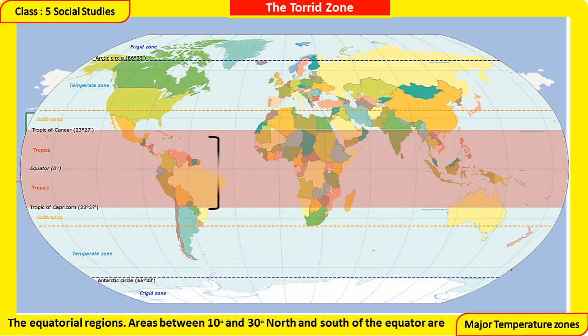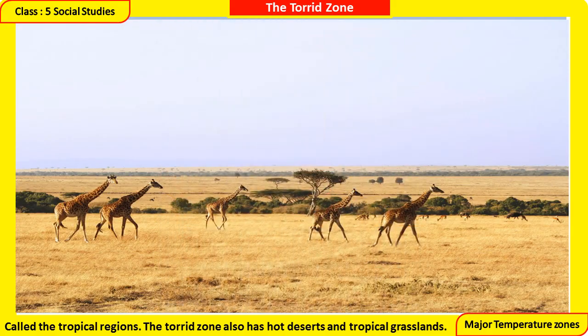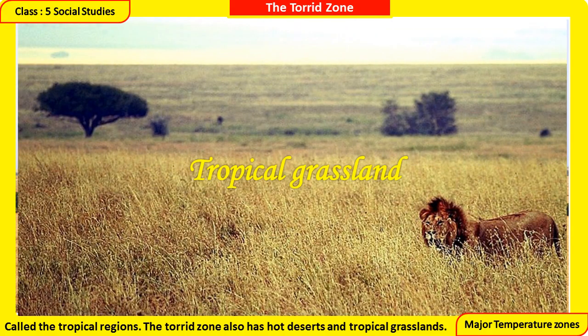Areas between 10 degrees and 30 degrees north and south of the Equator are called the Tropical Regions. The Torrid Zone also has hot deserts and tropical grasslands.